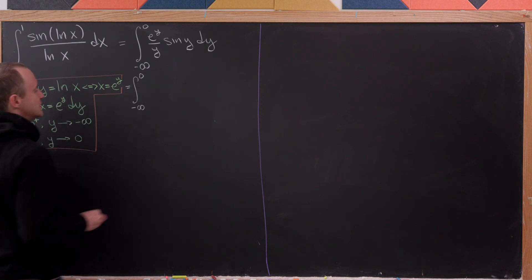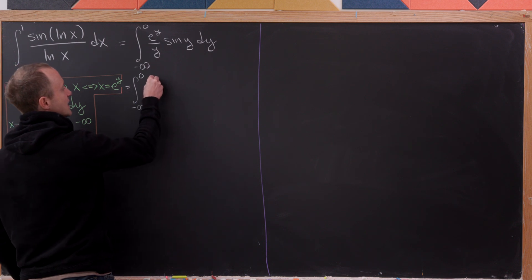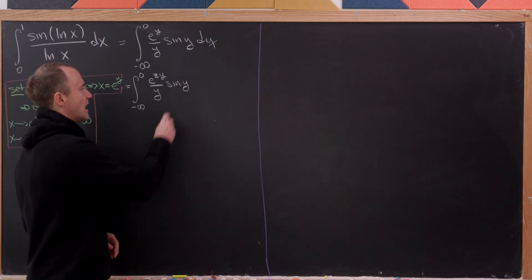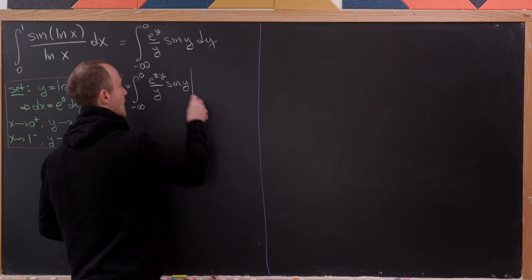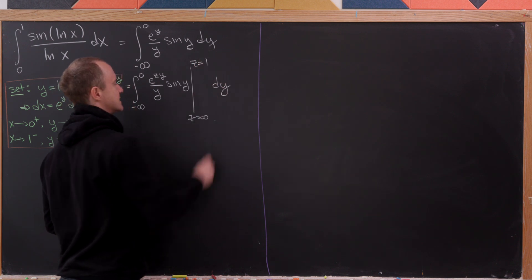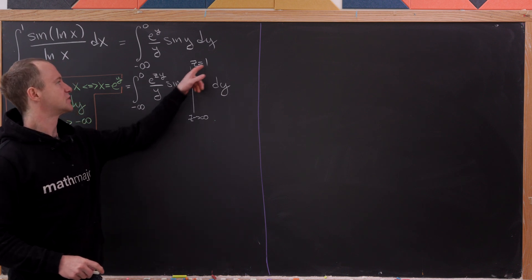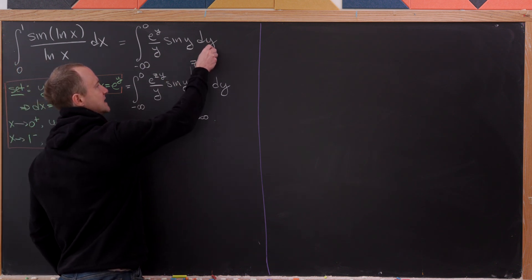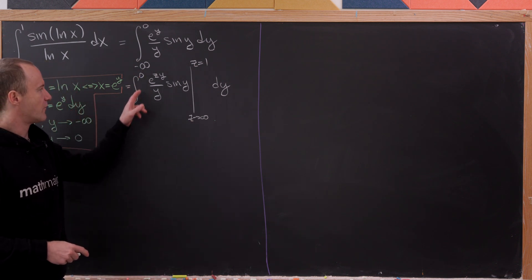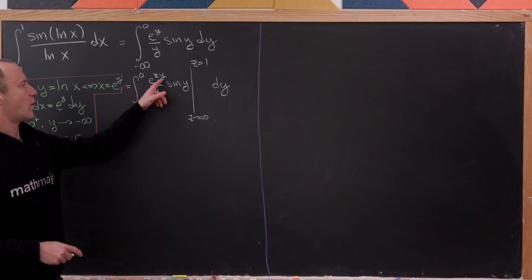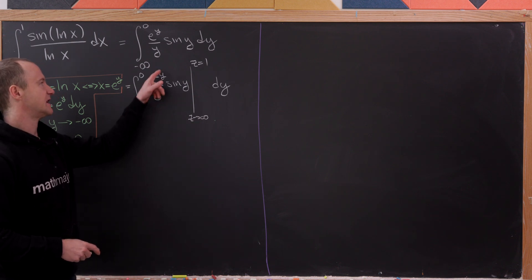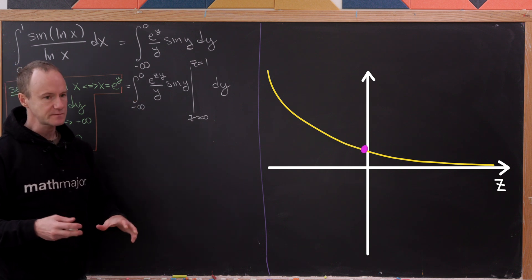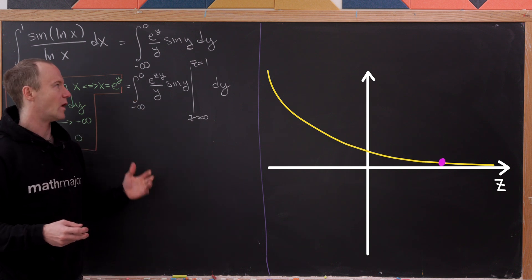We observe that the integrand looks like a function evaluated at two endpoints. We can write it as e to the z times y over y times sine of y, evaluated from z approaching infinity down to z equals 1. Since all y values are negative, as z approaches infinity the exponent approaches minus infinity and the exponential approaches 0, which is why that term zeros out.